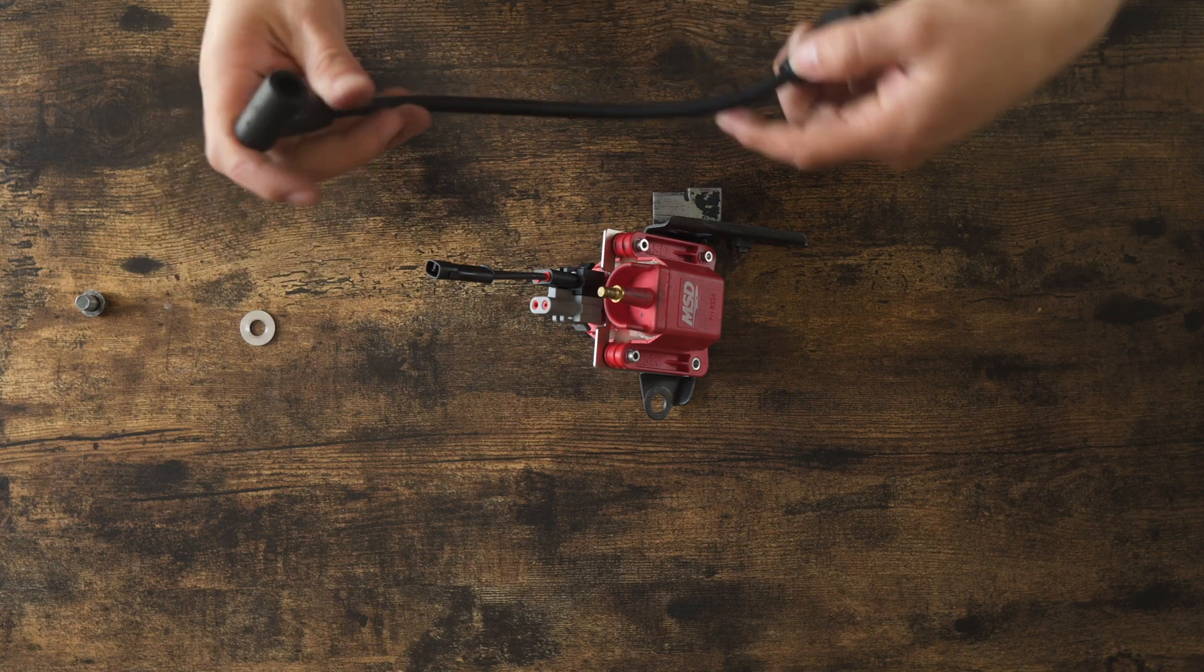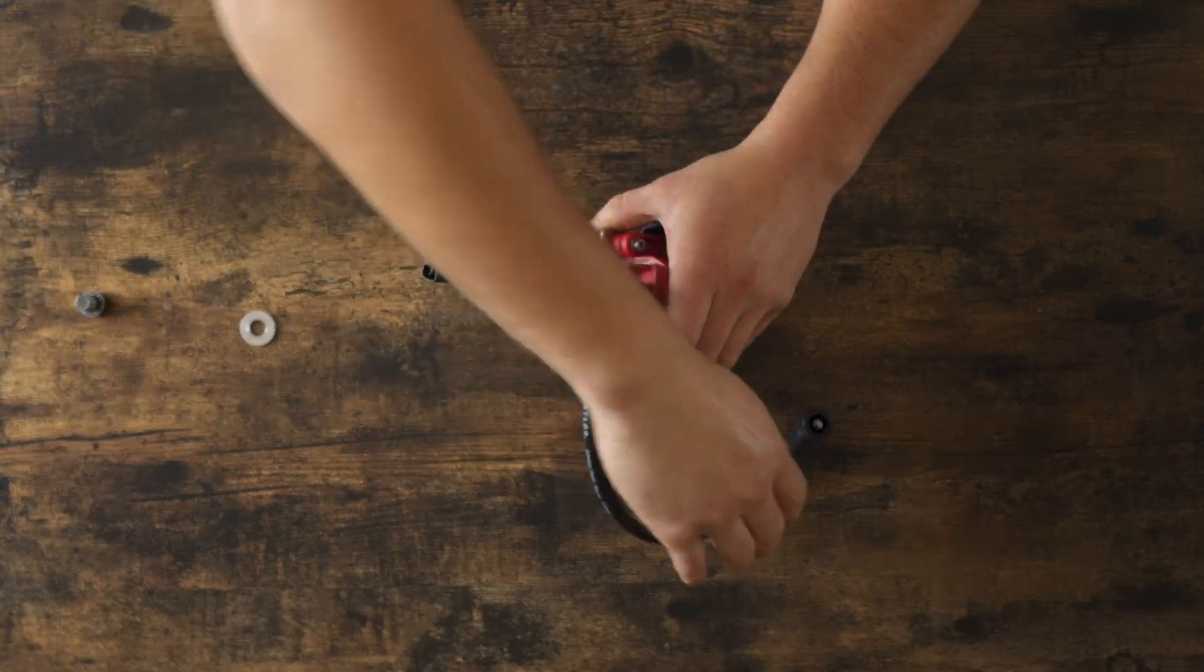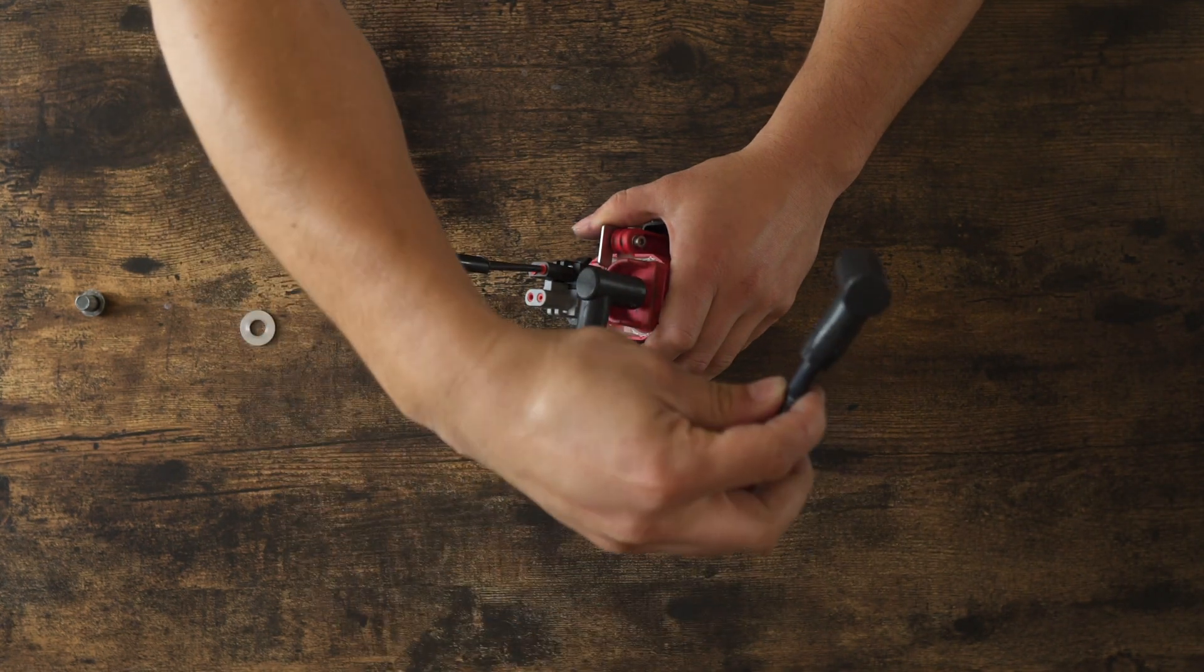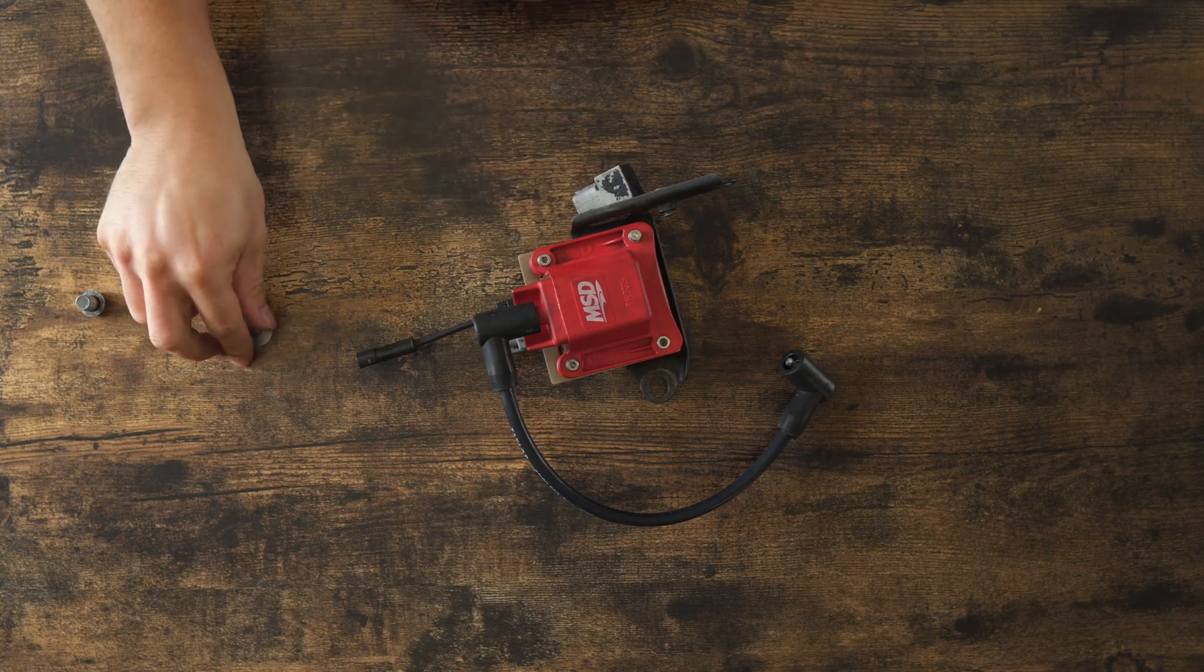And then you find your female connection on your spark plug wire, and you will attach it there. And then this will go on your distributor cap. And you're completely done with first generation kit.